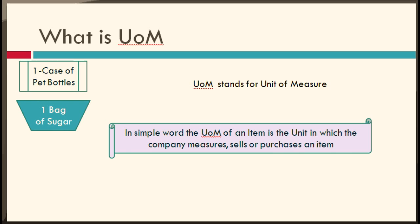Before going to purchasing UOM, let us understand what UOM means — it stands for Unit of Measure. To manage inventory items by different units of measure applicable to your business, you need to define individual units of measure. The UOM is simply the unit in which a company measures, sells, or purchases an item. For example, a company buys sugar in bags, so the bag is the UOM. When buying pet bottles, you buy in cases, so the case is the unit of measure.